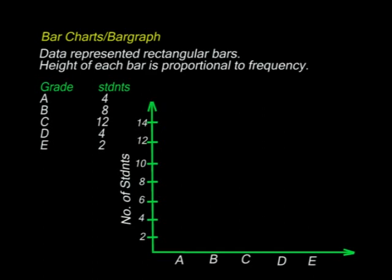The vertical axis will represent the number of students, and the horizontal x-axis will represent the grade. The scale I have chosen is that one unit will represent two students, shown on the vertical axis. The horizontal bars are of uniform width. After choosing my scale, I then start representing the information.